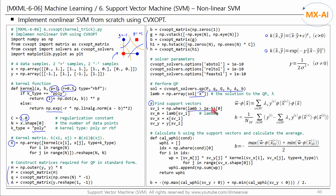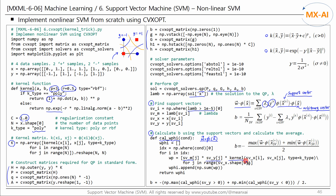We use the lambdas to find support vectors: data points with lambda greater than 0 are support vectors. Next, we find B using the lambdas and support vectors. We write a function to calculate the dot product of W and phi(x) using this formula, where XS represents the support vector and X is an arbitrary vector. X can be a positive or negative support vector used when calculating B, SVM is the lambda value of the support vector, SVY is the class of the support vector, and this part is the kernel. Using this function, we calculate B.